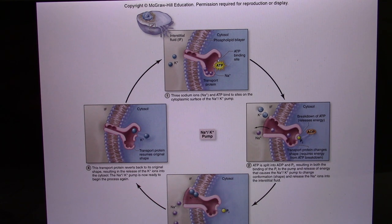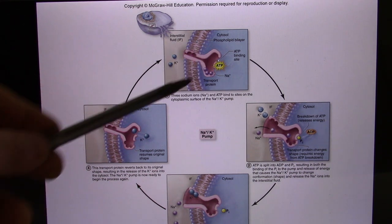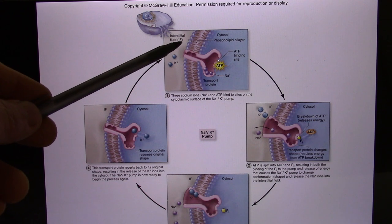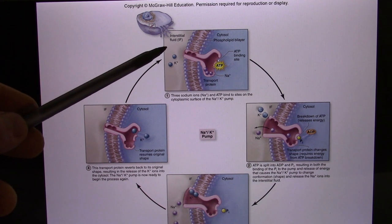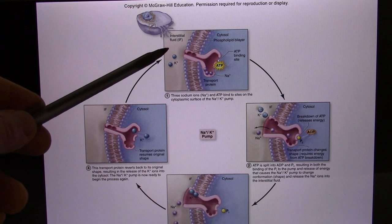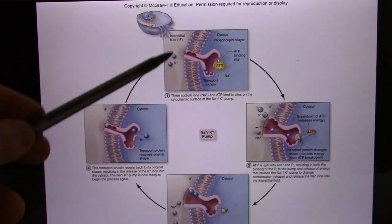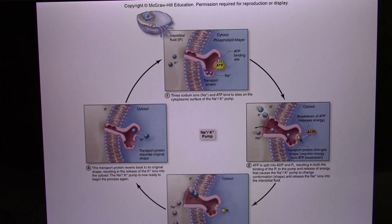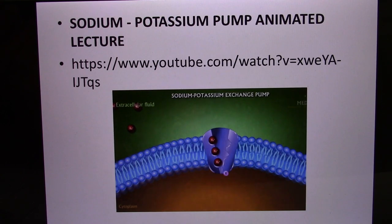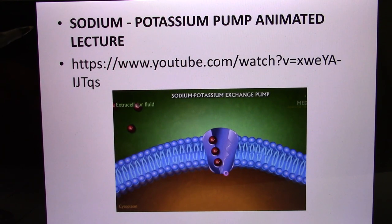Another example is the sodium-potassium pump. Every living cell has this pump, and it uses ATP as the energy source. It takes potassium and pumps it from low outside to high inside, and pumps sodium from low inside to high outside. So every living cell has high sodium outside and high potassium inside because of the sodium-potassium pump. You can think of this as an AC system working 24 hours a day, 7 days a week in every living cell.